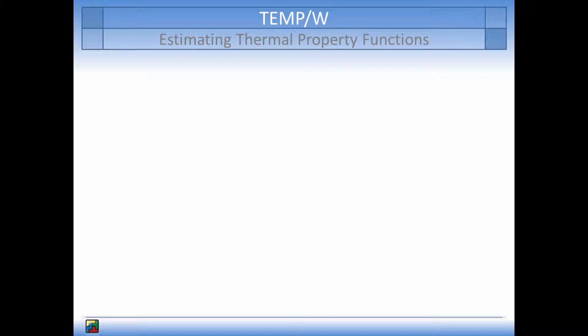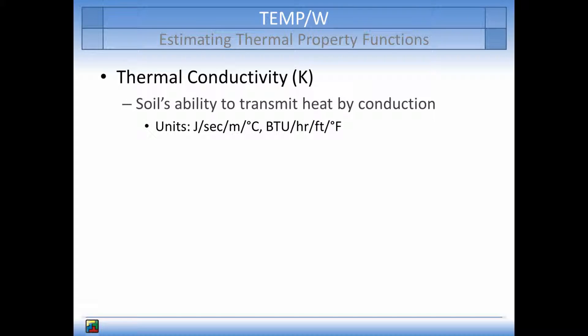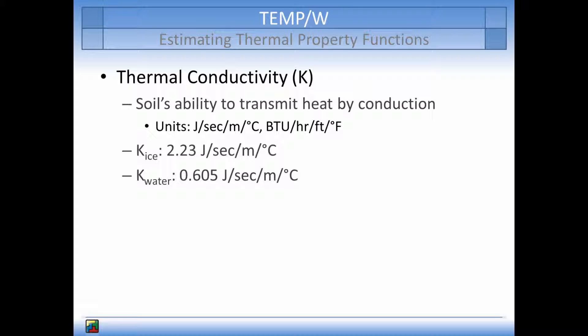The frozen and unfrozen thermal conductivities define the soil's ability to transmit heat by conduction, or the quantity of heat that will flow through a unit area of soil of unit thickness in unit time under a unit temperature gradient. The units are in joules per second per meter per degree Celsius, or BTU per hour per foot per degree Fahrenheit. Generally, the thermal conductivity of an unfrozen soil will increase with increasing water content. The thermal conductivity of a frozen soil is also generally higher than that of an unfrozen soil, as a result of the higher thermal conductivity of ice when compared to unfrozen water.